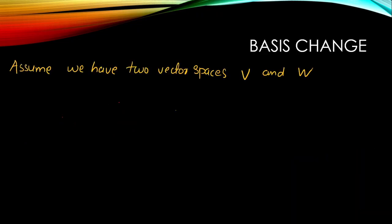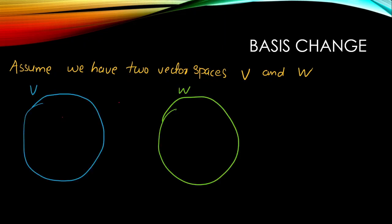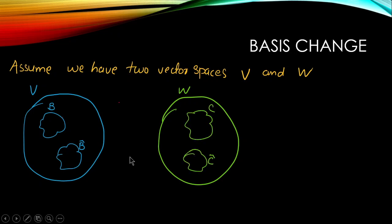Assume we have two vector spaces V and W. Inside V we have two different sets of basis vectors: set B and B̂. In W we have two sets of basis vectors: C and Ĉ.